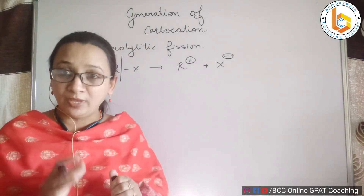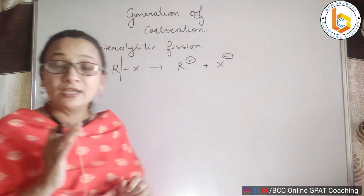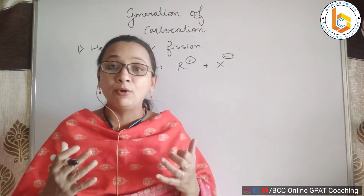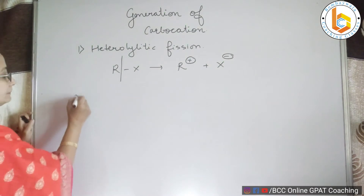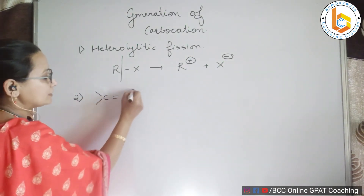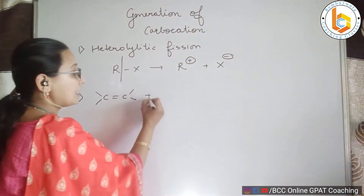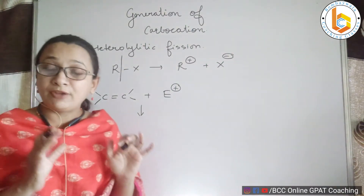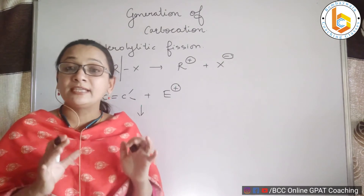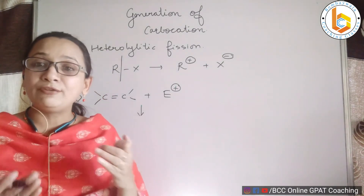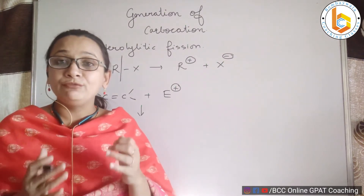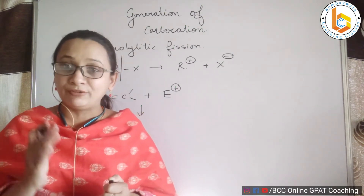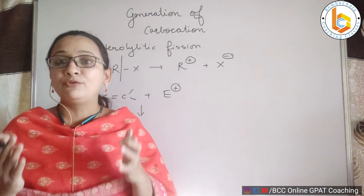One more additional and very important way in which carbocations are synthesized is by means of the presence of an electrophile in a double-bonded compound — for example, a C double bond C. I have made a complete video on this effect called the electromeric effect. Do watch that video, as the electromeric effect is also a method by which we produce carbocations.